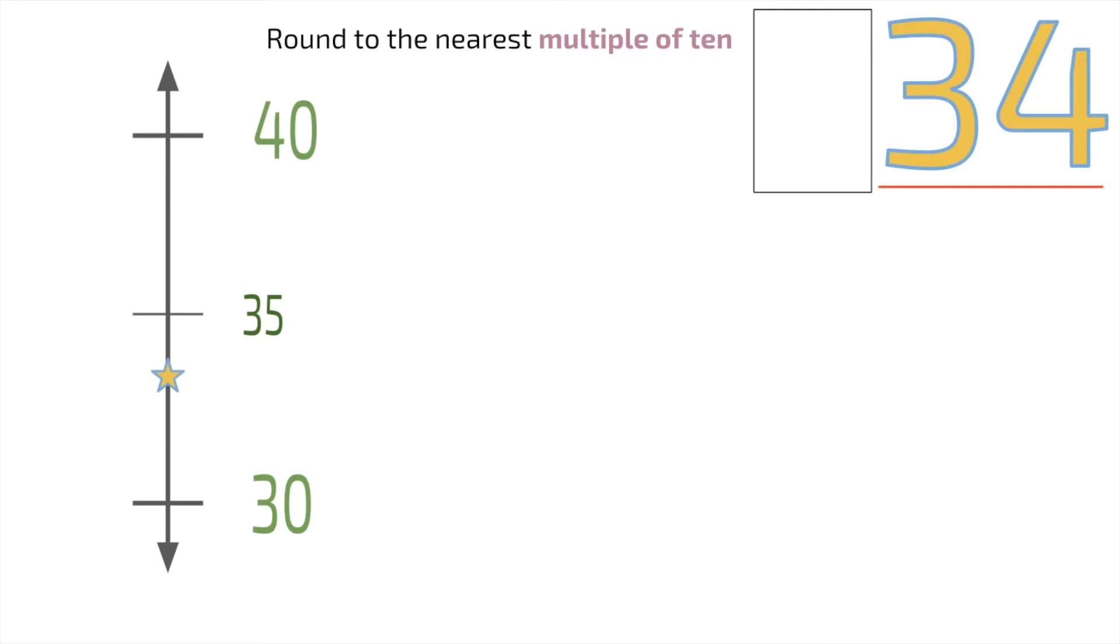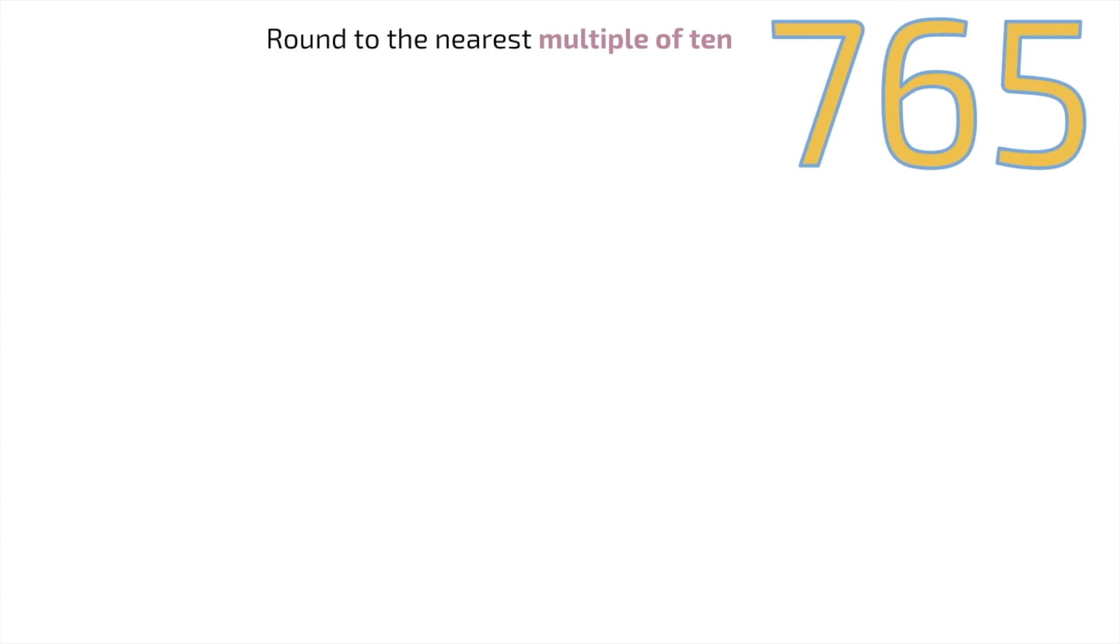But remember, our number isn't really 34—it's 634. So let's add on that 600. Boom! 634 rounds to 630. We're rounding to the nearest 10.